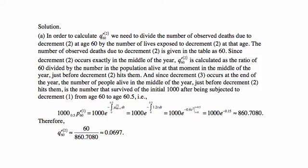Decrement 2 occurs exactly in the middle of the year, so we need the number of people alive just before the midpoint who can die from cause 2. Note that decrement 3 does not occur until the end of the year, so the only decrement that matters is decrement 1. We calculate how many people survive the effect of decrement 1 from age 60 to age 60.5: that's 1000 times ₀.₅p'₆₀⁽¹⁾, calculated as e to the minus the integral of the force 1.2t.